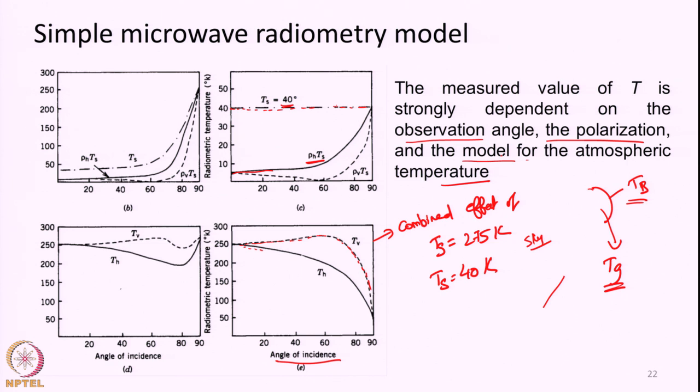Comparing this in analogy with optical remote sensing: in optical remote sensing, objects look completely different when we change the look angle as the source-object-sensor geometry changes. The same applies here — except the source is the earth itself. By changing the geometry of the instrument, changing the look angle or polarization, we get a different picture of the same object on the ground. The resultant brightness temperature is highly influenced by these directional effects and polarization effects.